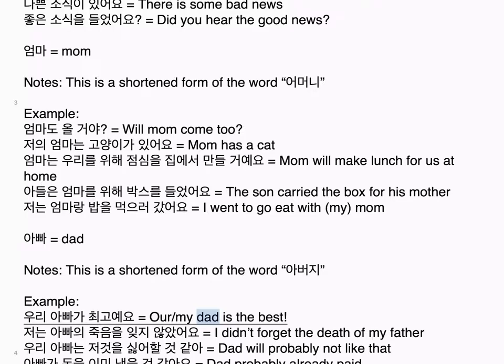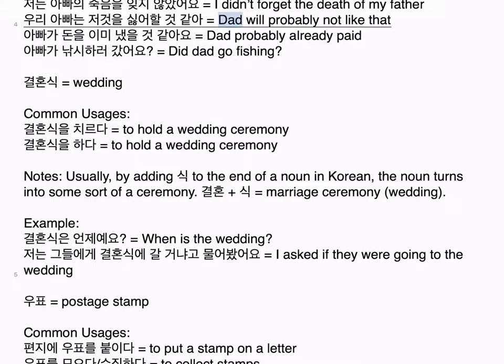아빠 equals dad. Notes: this is a shortened form of the word 아버지. Examples: 우리 아빠가 최고예요 — my dad is the best. 저는 아빠의 죽음을 잊지 않았어요 — I didn't forget the death of my father. 우리 아빠는 저것을 싫어할 것 같아 — dad will probably not like that. 아빠가 돈을 이미 냈을 것 같아요 — dad probably already paid. 아빠가 낚시하러 갔어요 — did dad go fishing?